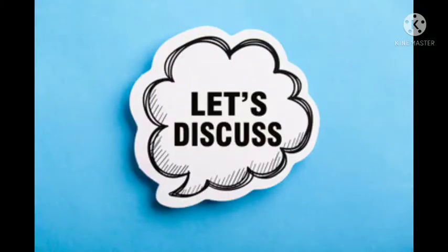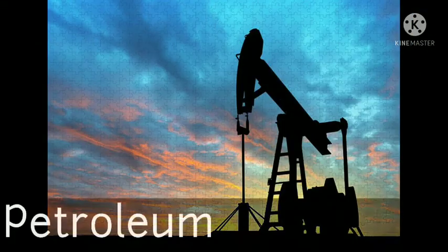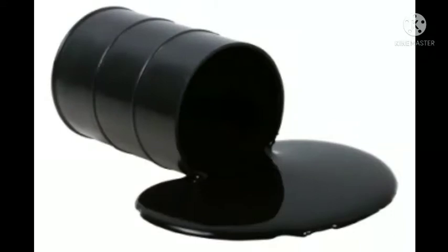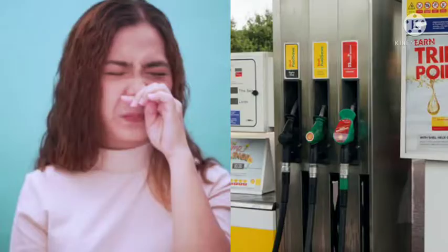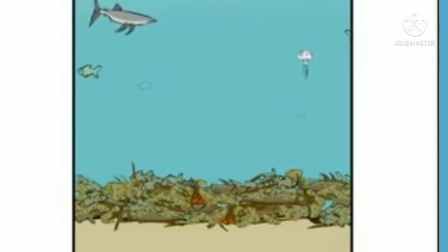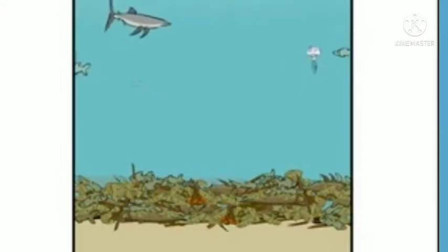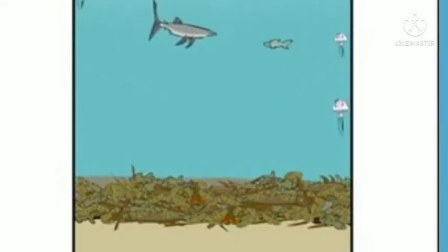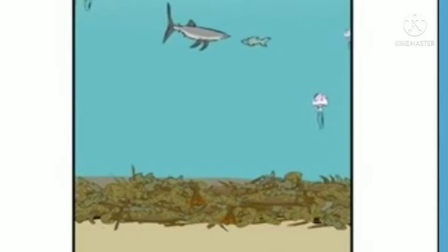Let us discuss about petroleum. Petroleum is a dark colored and thick oily liquid with an unpleasant smell. Petroleum was formed by the decomposition of remains of plants and animals buried under the sea millions of years ago.